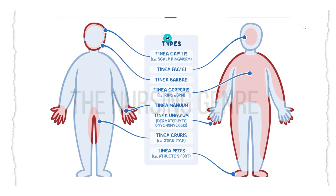The types of dermatophyte infections include: tinea capitis, tinea faciei, tinea barbae, tinea corporis, tinea manuum, tinea unguium, tinea cruris, and tinea pedis.